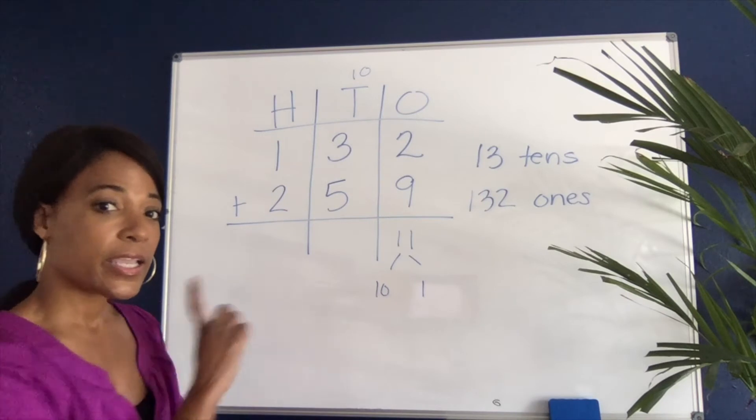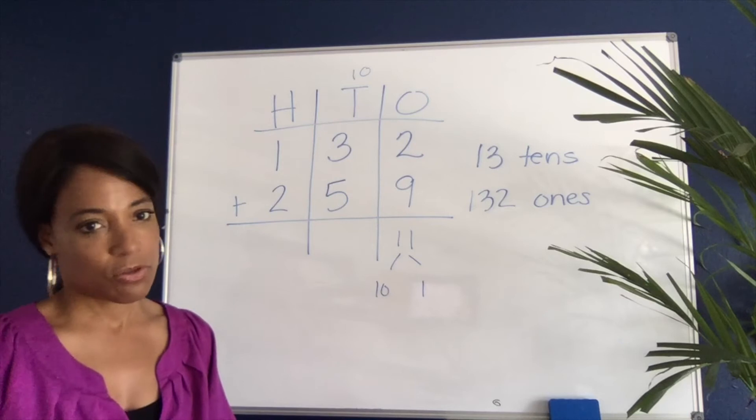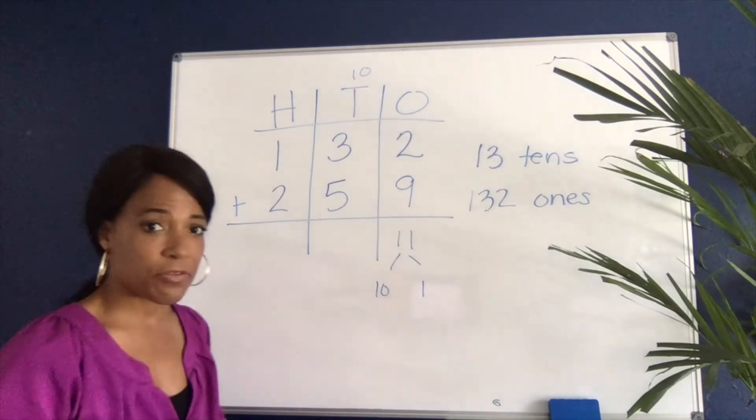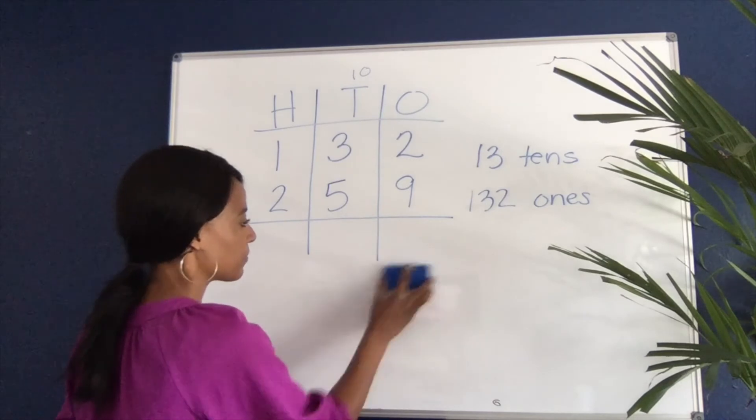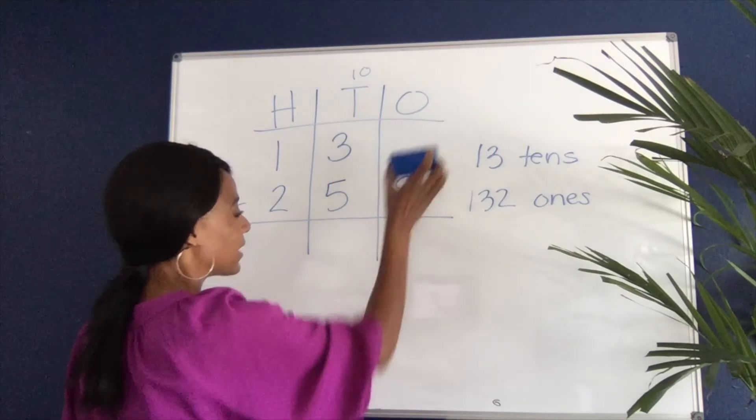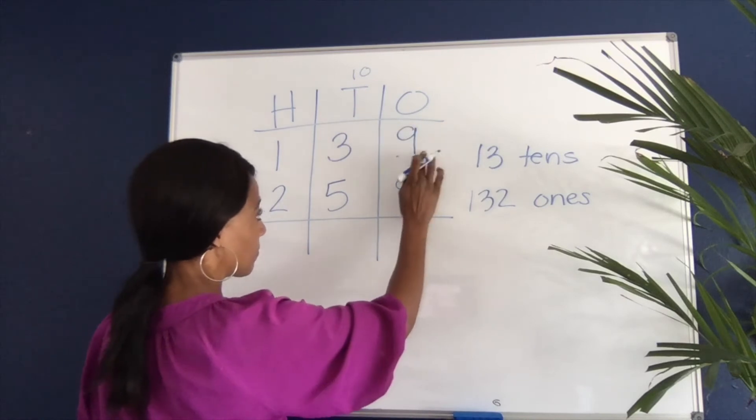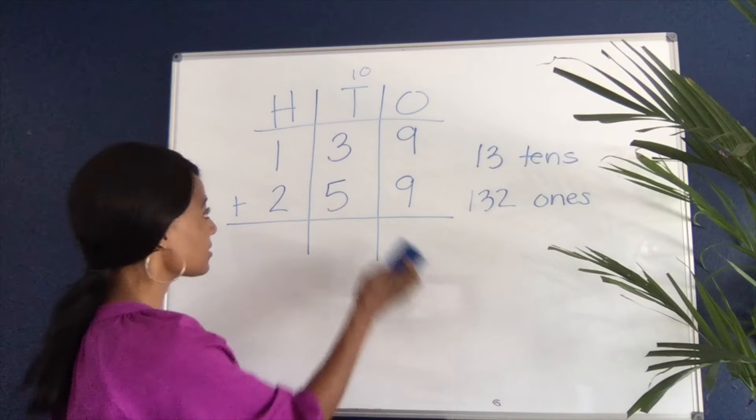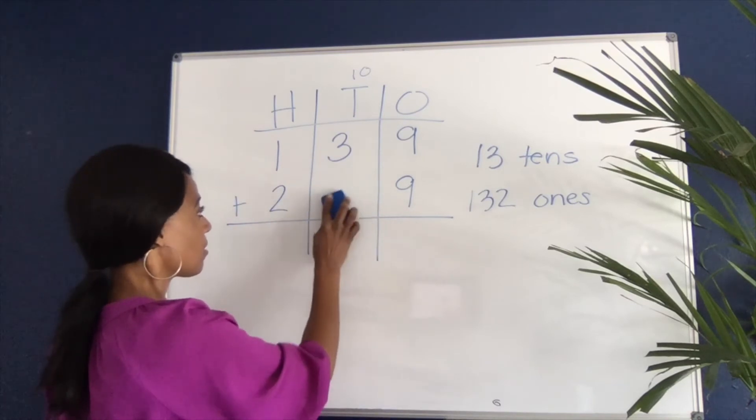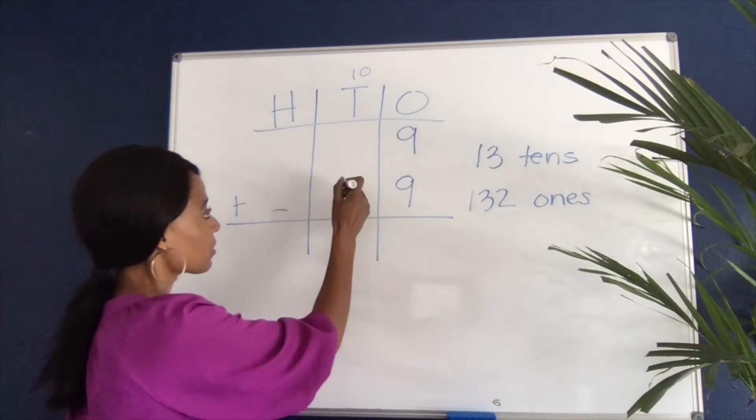We want to avoid introducing the standard algorithm too early, specifically in K through third. Another thing you'll notice is if I change this number here to a nine, and if I change these numbers all to nines, based on the way the standard algorithm works...